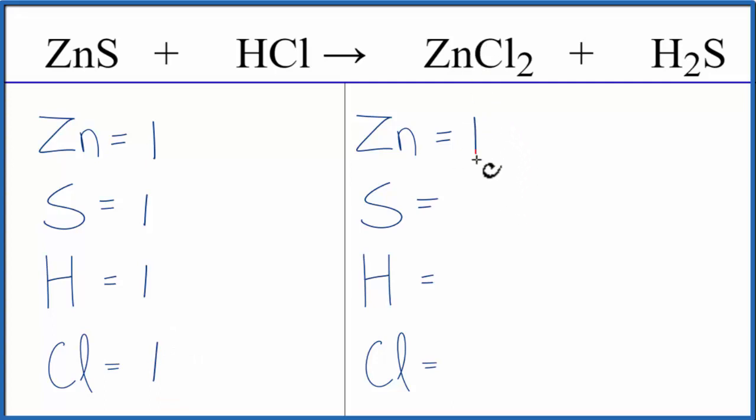On the product side of the equation, we have one zinc, one sulfur, two hydrogens, and two chlorines.